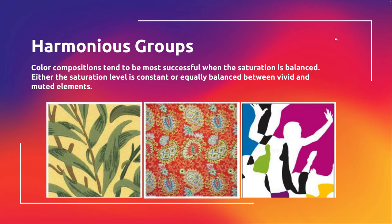Going to harmonious groups with patterns and compositions — generally more successful compositions tend to have balanced saturation. Whether the balance is symmetrical or asymmetrical, you can balance through color. When you have a balanced composition, that's usually when you have the most successful results.